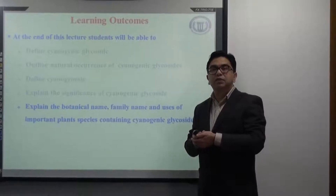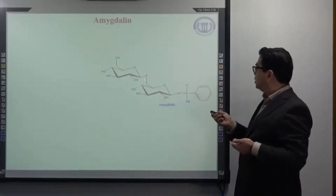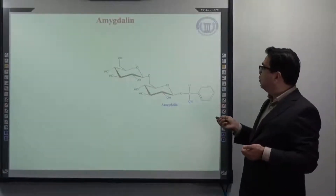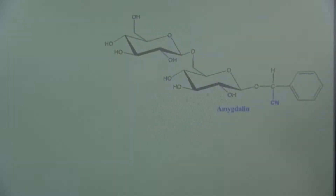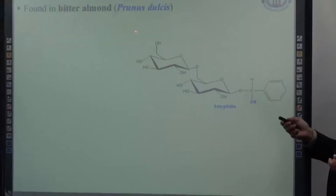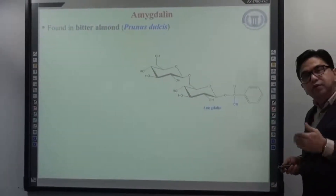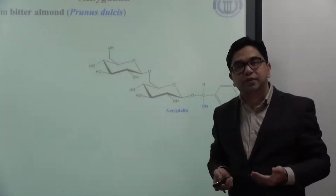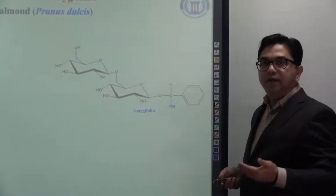First we will start with the example of amygdalin. This is the structure of amygdalin. Amygdalin is an example of a cyanogenic glycoside having 2 sugars, and it is mainly found in bitter almond. The botanical name of bitter almond is Prunus dulcis. It is also found in the kernels of various other fruits like apple seeds.